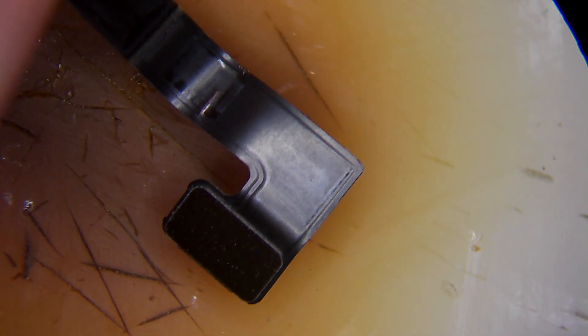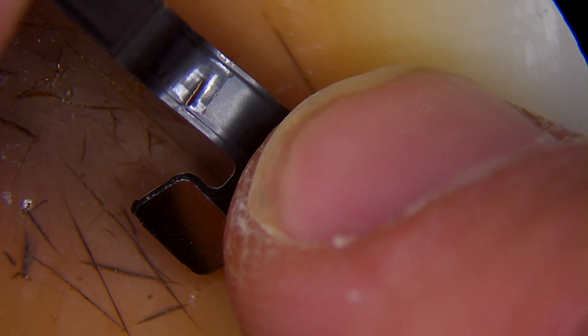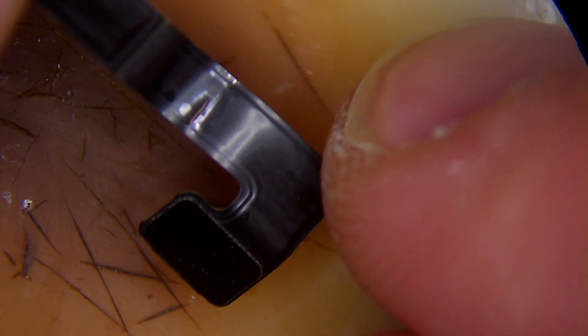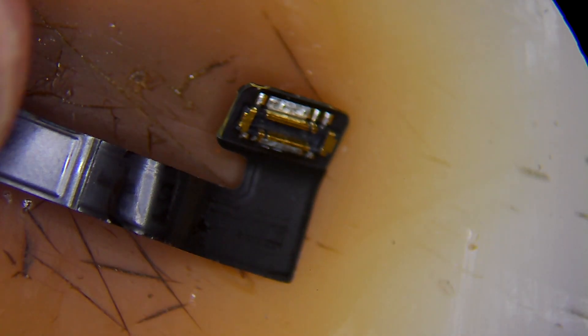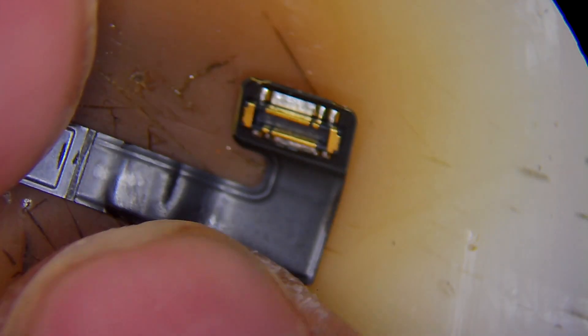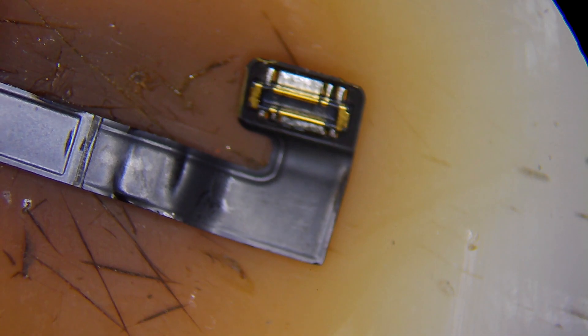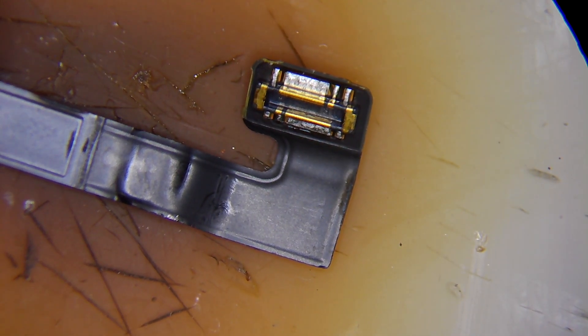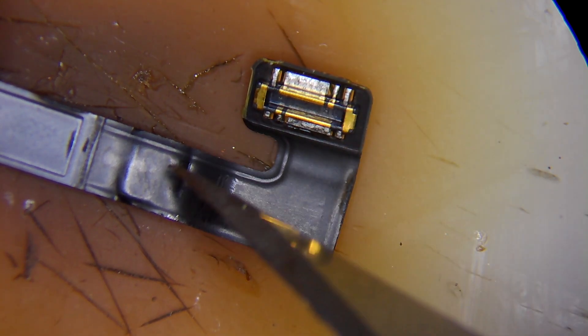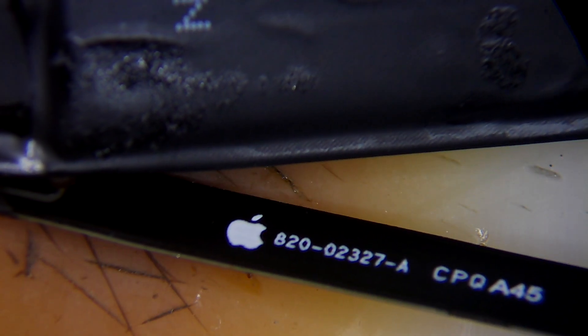As you can see there is a small wrap on the flex, especially on the data line. Let's just check it from the other side if it got deeper. Yes, you can also see that it got a little deeper to the other side of the flex, which means that we have a disconnection between the BMS flex and the connector.